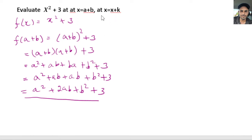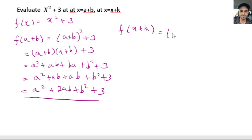Now let's go ahead and do the same thing for f(x + k). We want to see what is the value of the function at x plus k. We do the same thing — we plug in x plus k wherever we have x. This becomes (x + k) squared plus 3. All we did is substitute x plus k for the x in the function. Then we go ahead and simplify: this is (x + k) times (x + k) plus 3.